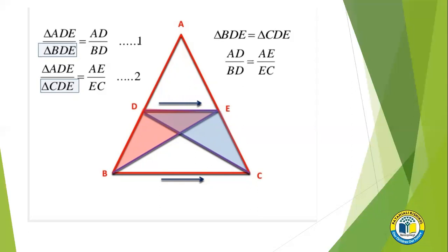So with this, we have seen that the ratio of their areas becomes equal. That is, equation 1 and equation 2 become equal. So AD upon BD becomes equal to AE upon EC.